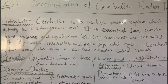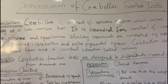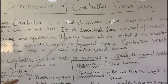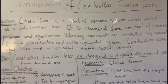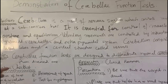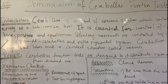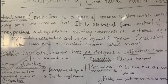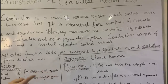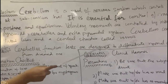The Cerebellum is a part of the nervous system which controls motor activity at a subconscious level. It is essential for control of muscle tone, posture, and equilibrium. Voluntary movements are controlled by the interaction of the pyramidal, cerebellar, and extrapyramidal systems. The Cerebellum consists of two lateral lobes and a central structure called the vermis.